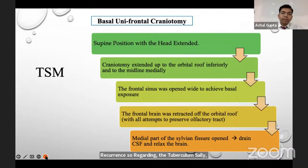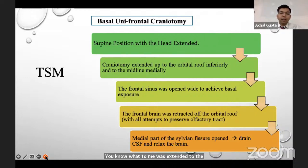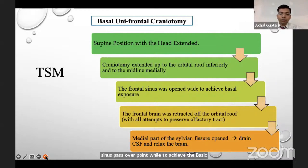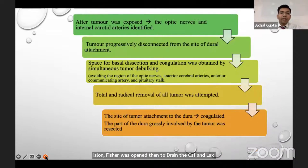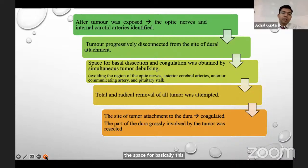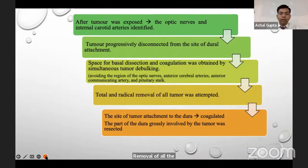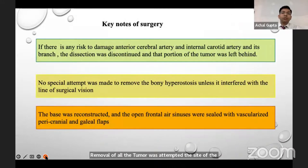For tuberculum sellae meningioma, we mainly used a basal unifrontal craniotomy with the patient in supine position and head extended. The craniotomy was extended to the orbital roof inferiorly and to the midline medially. The frontal sinus was opened wide to achieve basal exposure. The frontal brain was then gently retracted off the orbital roof to preserve the olfactory tract on one side. The middle part of the sylvian fissure was opened to drain CSF and relax the brain. After tumor exposure, the optic nerves and internal carotid arteries were identified, and the tumor was progressively disconnected from the site of dural attachment. Space for basal dissection and coagulation was obtained by simultaneous tumor debulking. Total and radical removal of all tumor was attempted, and the site of dural attachment was coagulated with involved dura resected.